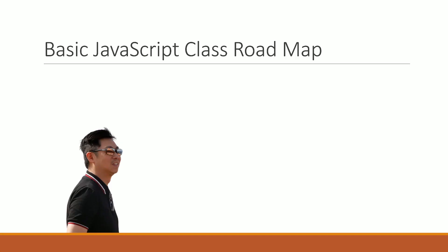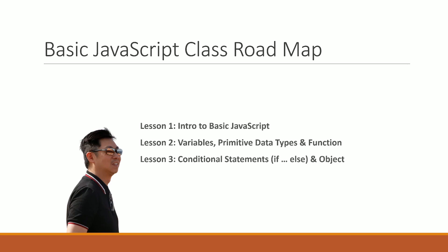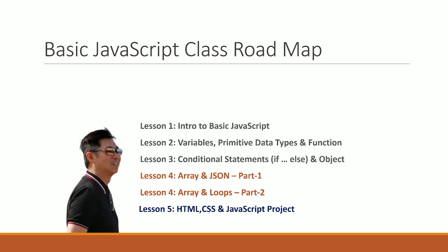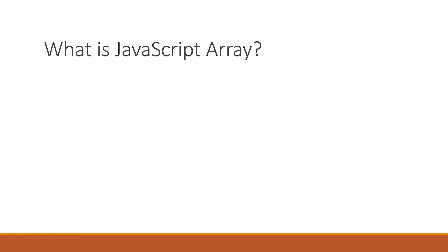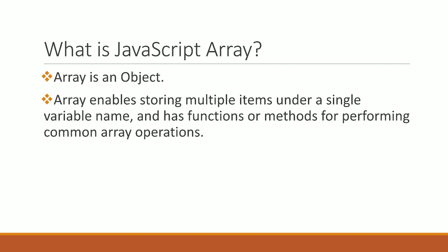If you are interested in JavaScript, you will learn the JavaScript. Now let's look at array looping and loops, as in for-loop part 2. We have a basic JavaScript project, and we have a JavaScript array. What is a JavaScript array? An array is an object. Array enables storing multiple items under a single variable name, and has functions or methods for performing common array operations.